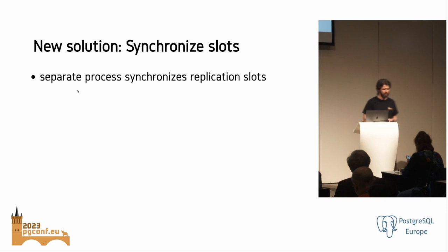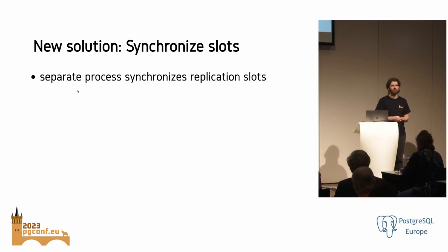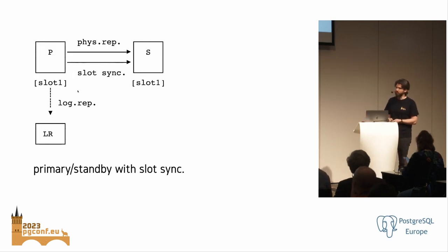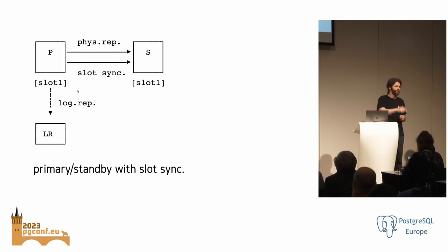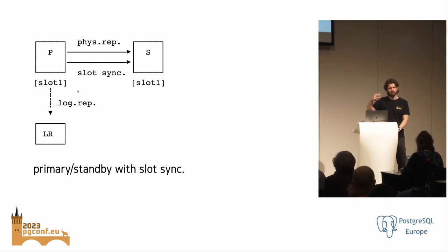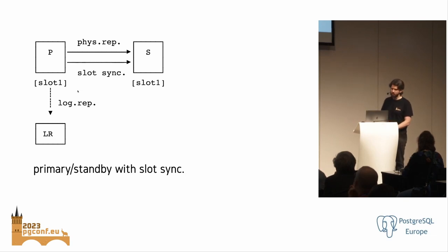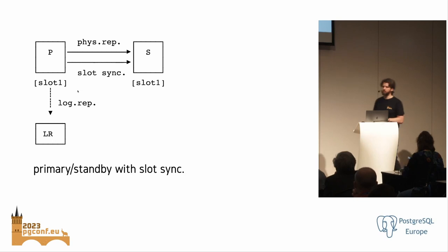The new solution I'm proposing is a separate process — apart from WAL — that synchronizes the slots. This gives you flexibility to configure slot syncing independently of WAL replication. The picture is that physical replication does its own thing, and there's a separate connection just for slot syncing. It's very lightweight — a replication slot is just a small data structure with an LSN, a name, and a small amount of data.